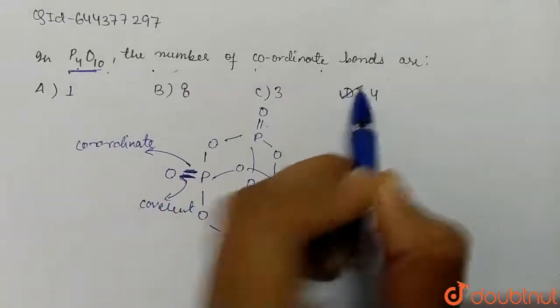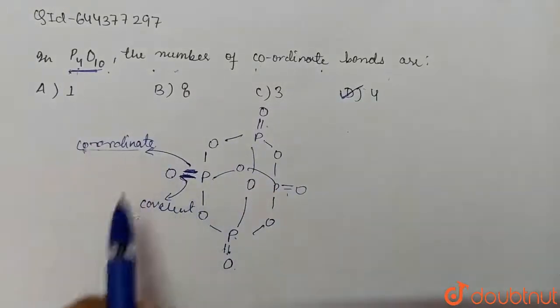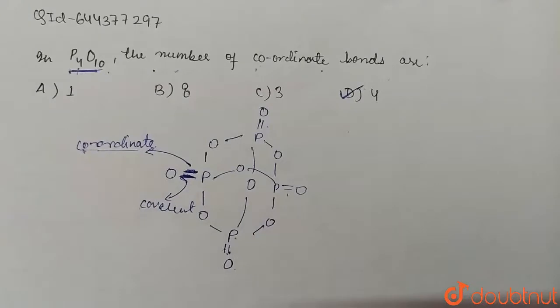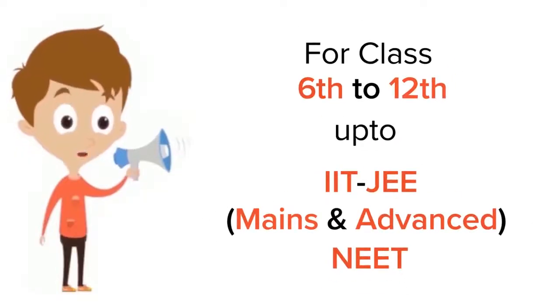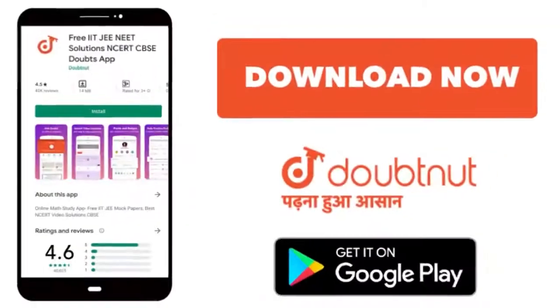So in P4O10 we have four coordinate bonds. So here our answer will be D. I hope you understood the question. Do practice this question. Thank you. For class 6 to 12, IIT-JEE and NEET level, trusted by more than 5 crore students, download Doubtnut app today.